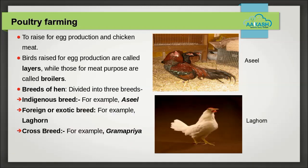2. Foreign or exotic breeds — these lay more eggs and give more meat compared to indigenous breeds; an example is White Leghorn. 3. Crossbreeds — breeds chosen for crossbreeding have desirable characters that become part of the offspring as a result of crossbreeding; for example, Gramapriya.